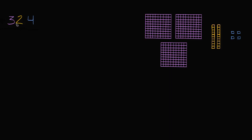I have here the number 324, which we can view as: since I have a three in the hundreds place, we could say this is three hundreds. I have a two in the tens place, so we could say plus two tens. And then I have a four in the ones place, so I can say plus four ones.